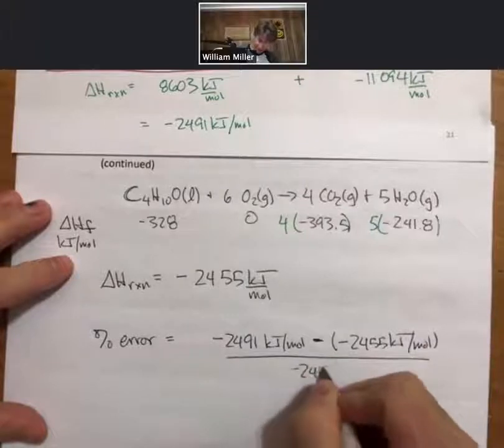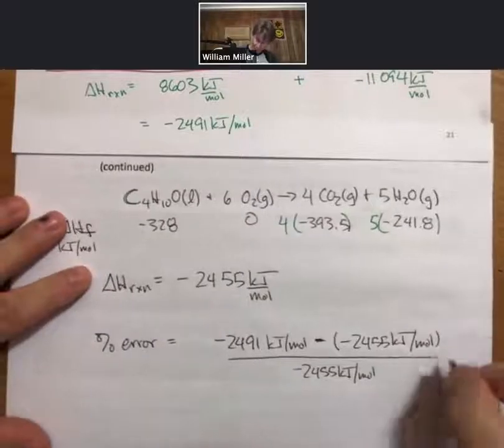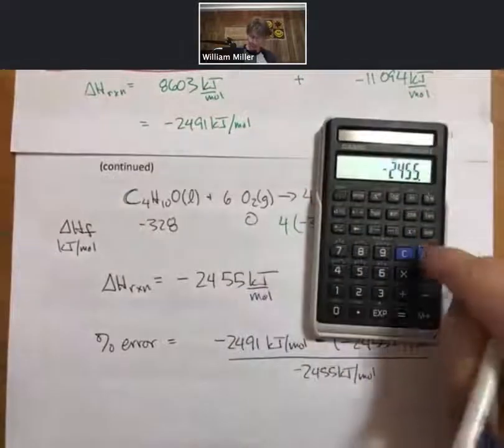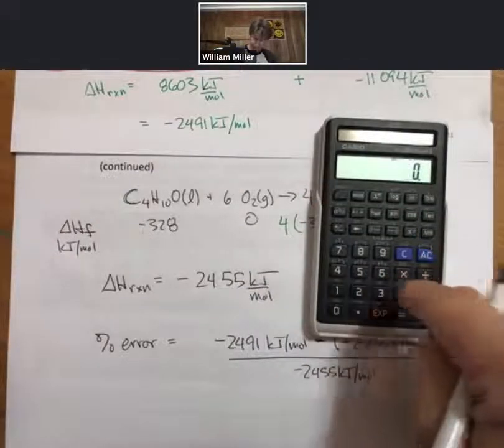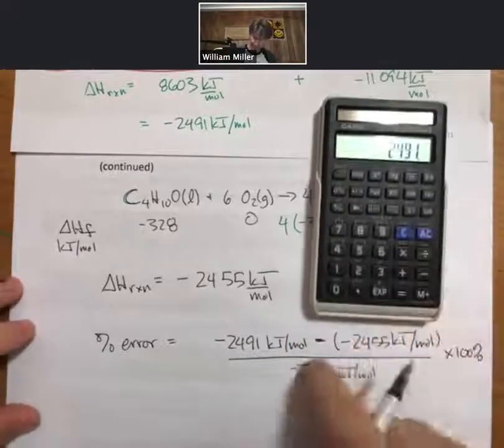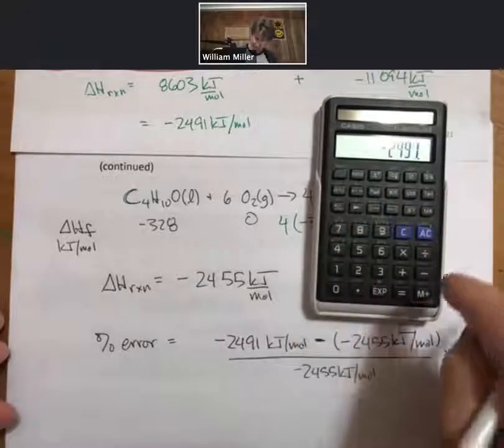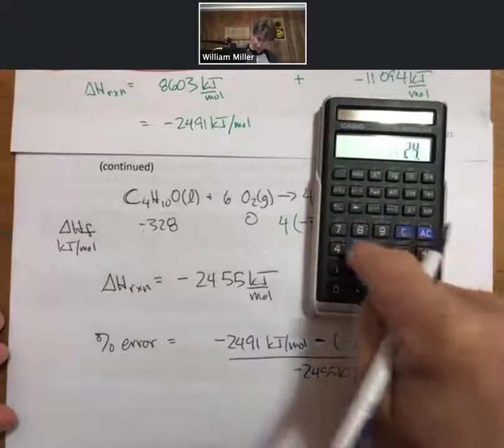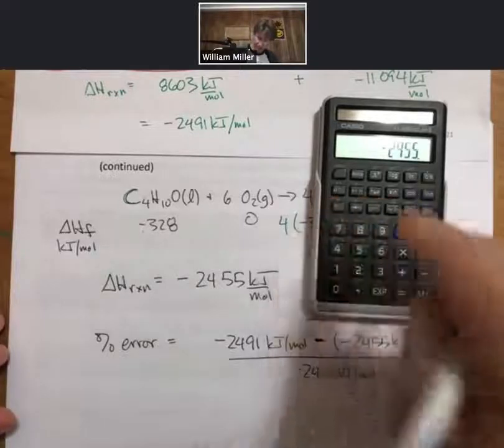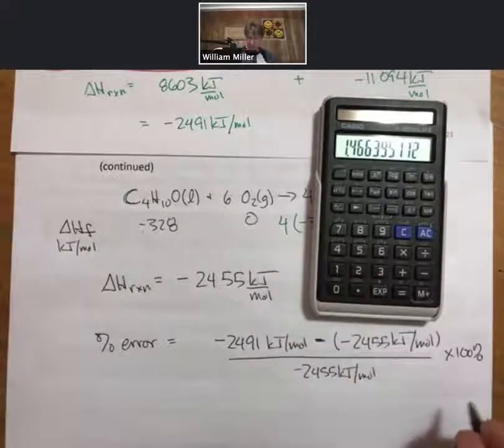Times 100%, we're going to get a relatively small percent error. Minus 2,491, so there's two minuses there—2,491 minus, plus 2,455 divided by 2,455 minus times 100%: 1.5% error.